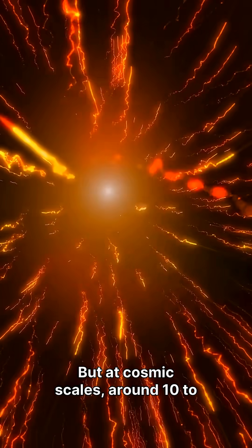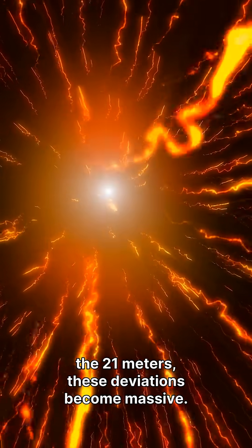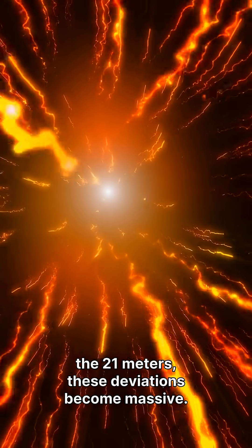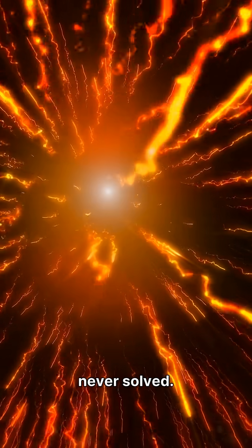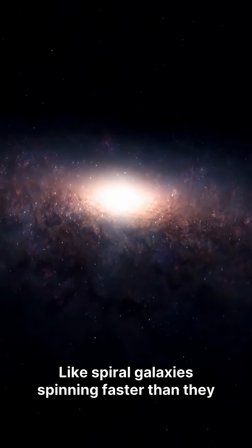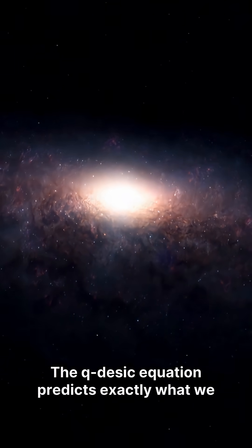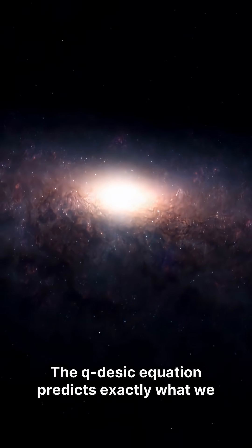But at cosmic scales, around 10 to the 21 meters, these deviations become massive. We're talking about galaxies and mysteries we've never solved. Like spiral galaxies spinning faster than they should. The Q-Desic equation predicts exactly what we observed.